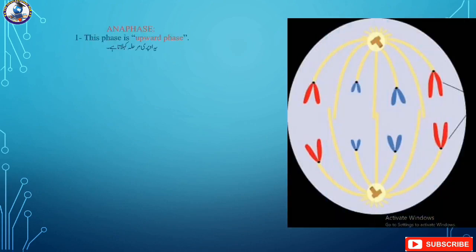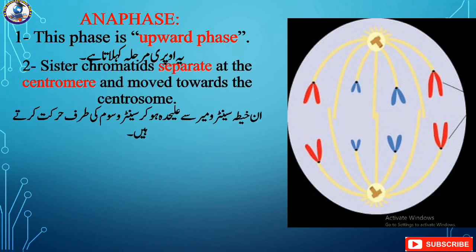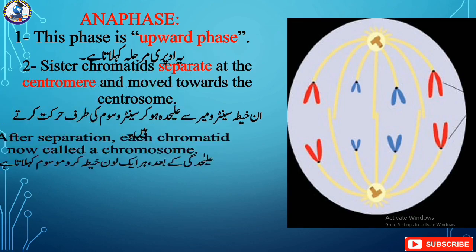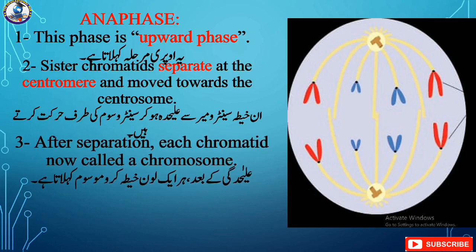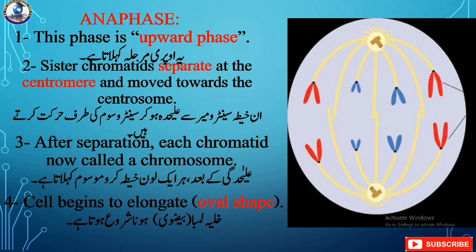The next stage is anaphase, which is the third stage of mitosis. This phase is known as the upward phase because each chromatid separates at the centromere and moves towards its respective centrosome. After separation, each chromatid is now called a chromosome. The cell also begins to elongate and becomes oval in shape.